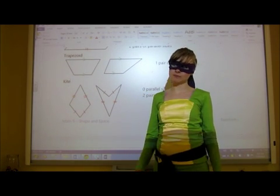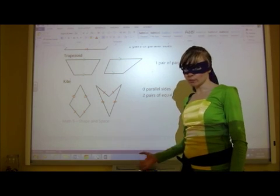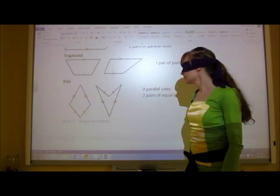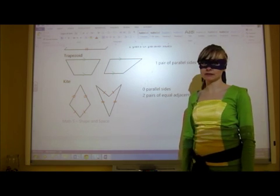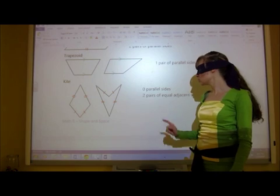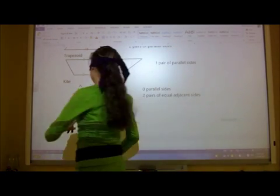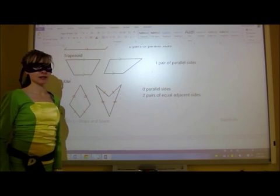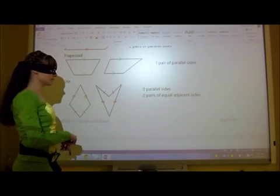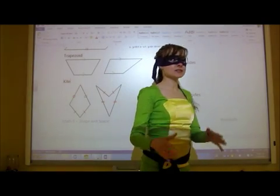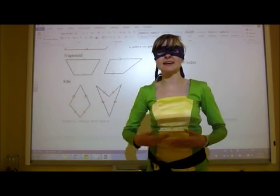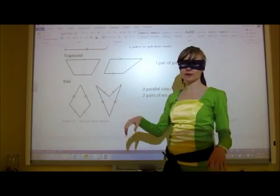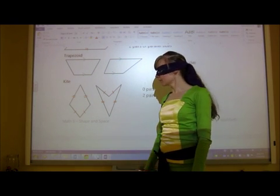The last named quadrilateral is a kite. You'll probably remember this one because it actually looks like the shape of a kite that we fly in the wind. A kite does not have any parallel sides, and it has two pairs of equal adjacent sides. So this side and this side that are touching have to be the same length, and this side and this side that are touching have to be the same length.